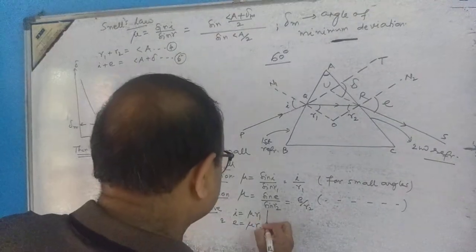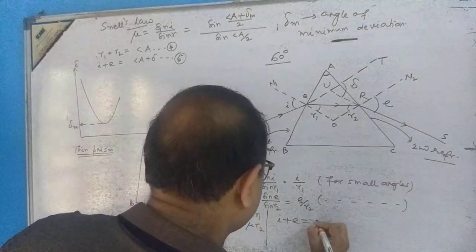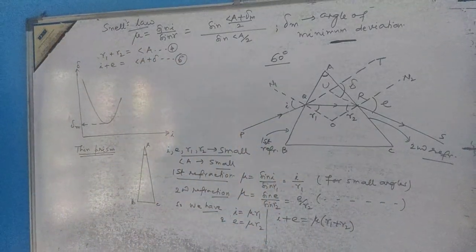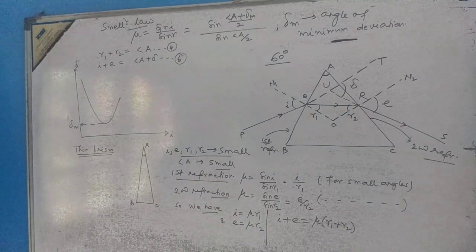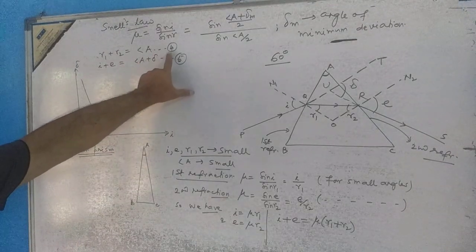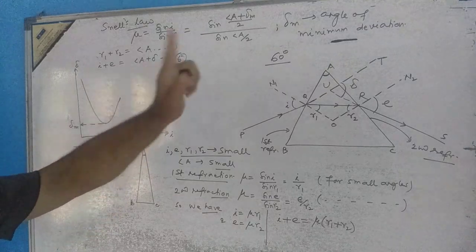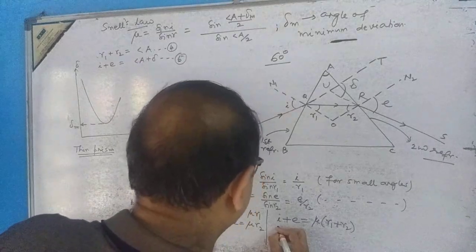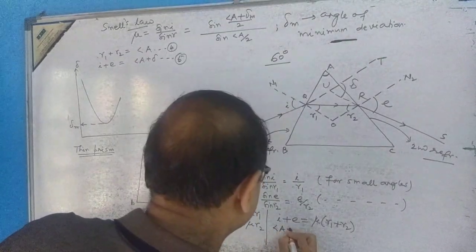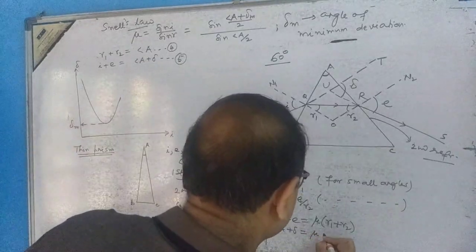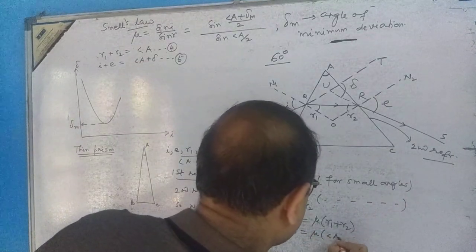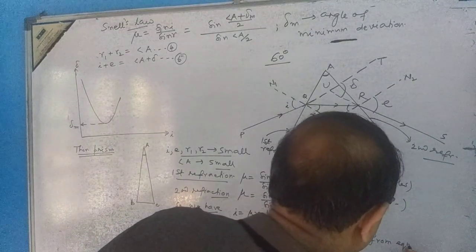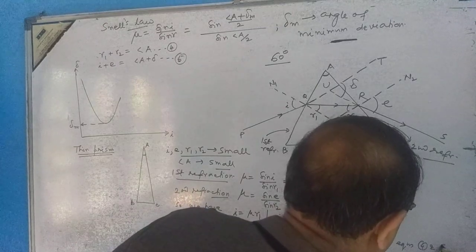Adding these two: i plus e equals mu times (r1 plus r2). Now, taking reference from equations 4 and 5, we know that A plus delta equals mu times A, which comes directly from substituting into those equations.